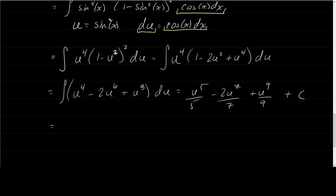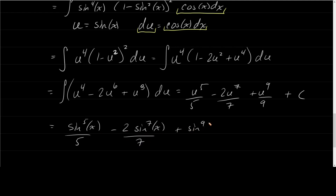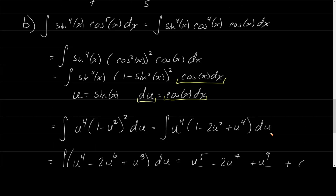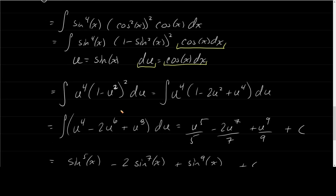Substituting back, the final answer is sine to the fifth of x over 5, minus 2 sine to the seventh of x over 7, plus sine to the ninth of x over 9, plus C. Because cosine was odd, that's the one we split off, and we wrote the remaining terms in terms of sine, then did u-substitution.